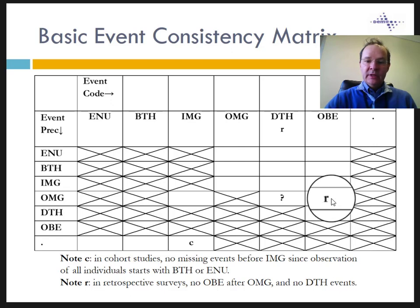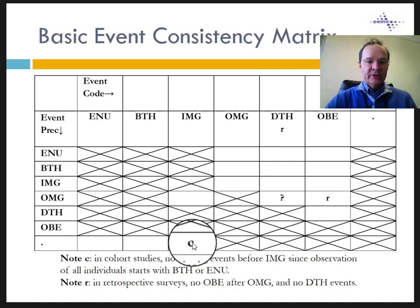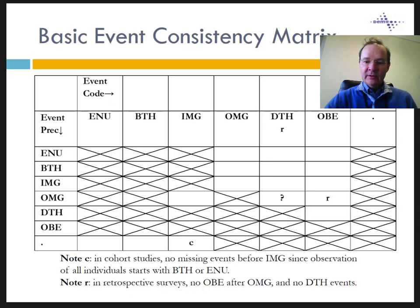If you are analyzing cohort data, there should be no missing event before in-migration, because in cohort studies all observations start with either enumeration or birth. A more complex event consistency matrix is found in our manual published in BMC. This more complex matrix includes other events such as internal exit and entry, round of data collection, and last interview.